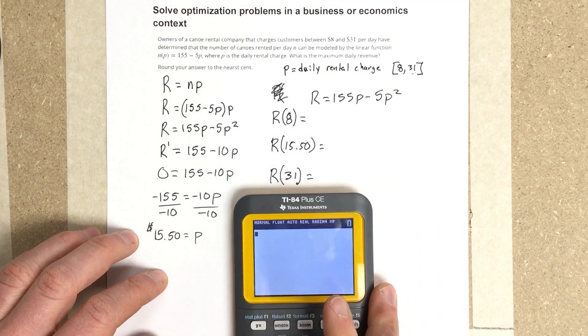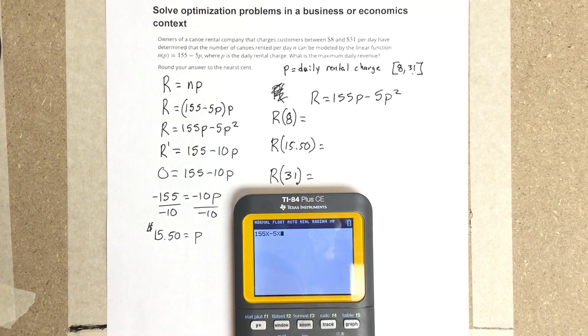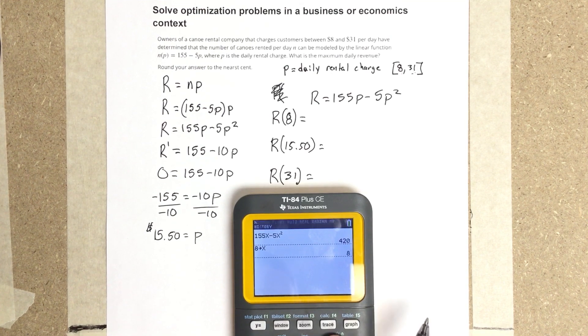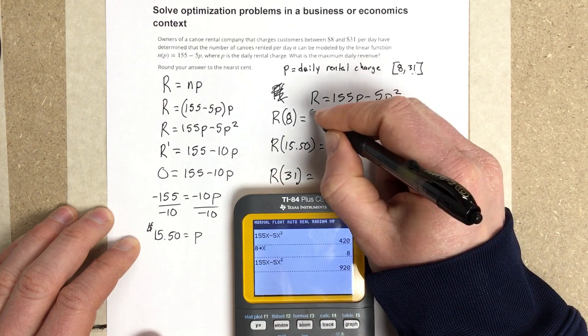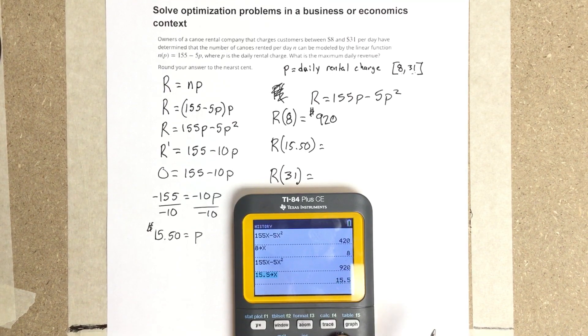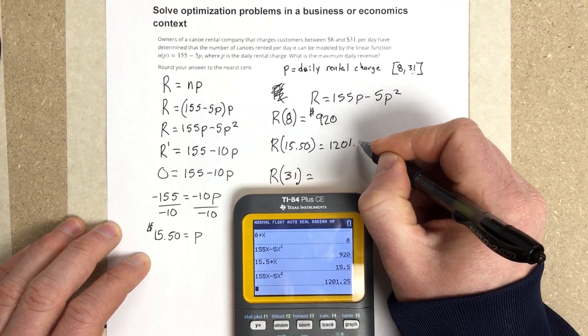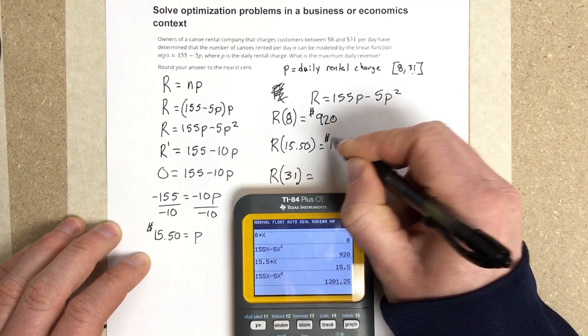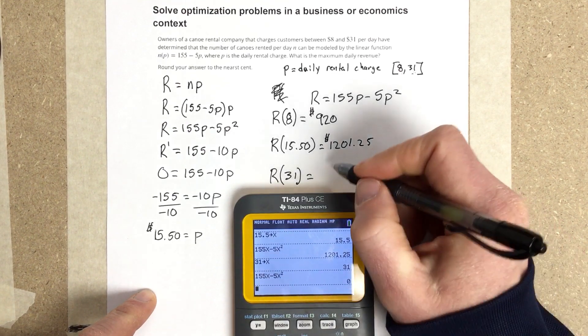We're going to say 155X minus 5X squared, and then we're going to store 8 as X. That's 920. And then we're going to do 15.5 stored as X. That's going to be $1,201.25. And 31 gives us $0.